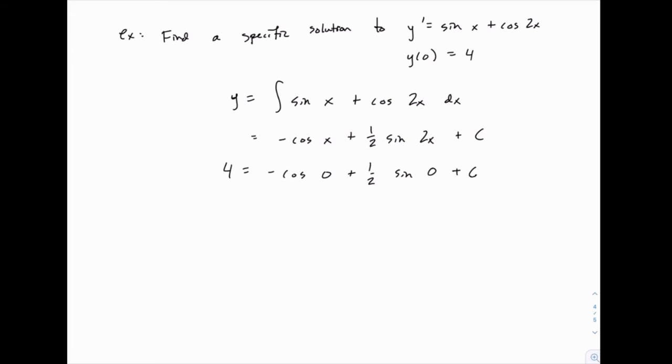Now, of course, sine of 0 is 0, and cosine of 0 is 1. So we have 4 equals negative 1 plus c, or c equals 5. So the specific solution would be y equals negative cosine of x plus 1 half sine of 2x plus 5.